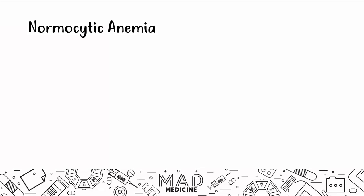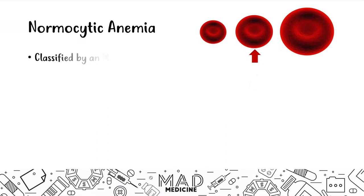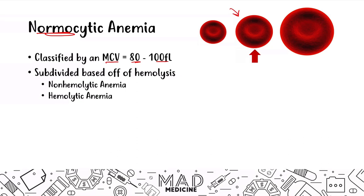Let's talk about normocytic anemias, because autoimmune hemolytic anemias are a subtype of normocytic anemias. Normocytic anemias are classified by an MCV that is normal — 80 to 100 — meaning you have a normal red blood cell volume. These can be subdivided based on hemolysis into non-hemolytic and hemolytic anemias, and within hemolytic anemias, you have intrinsic and extrinsic causes.